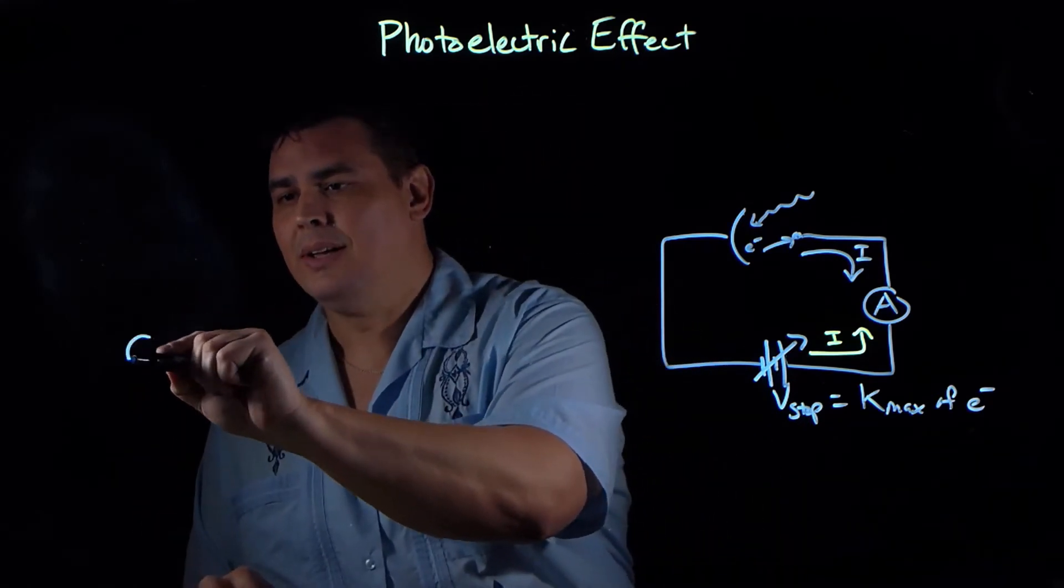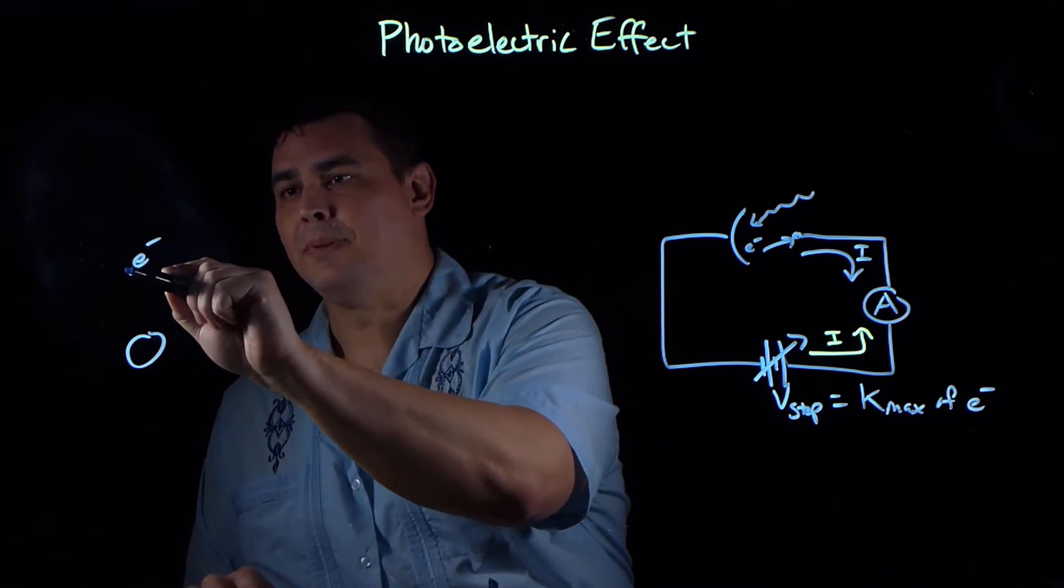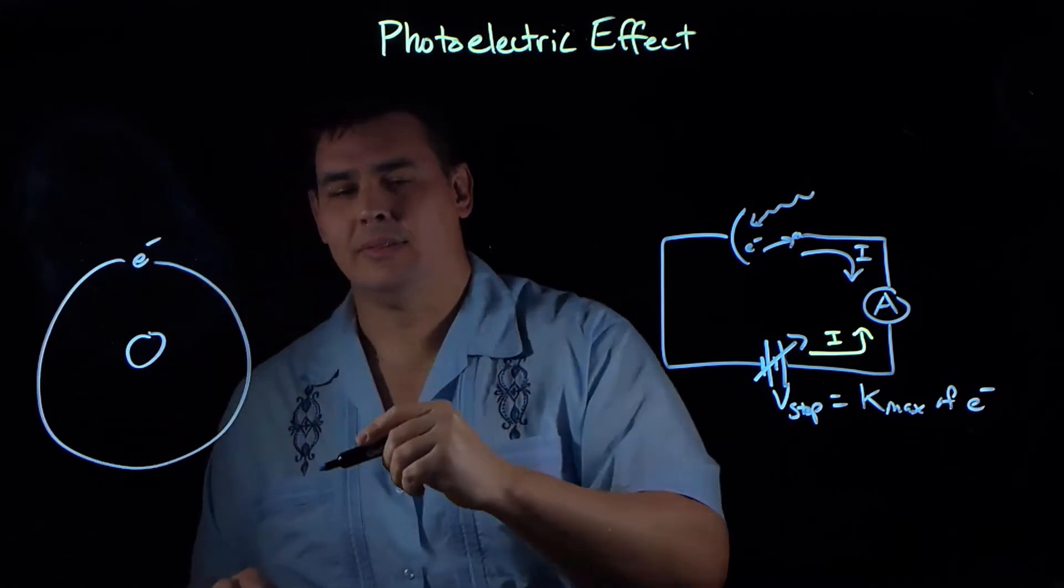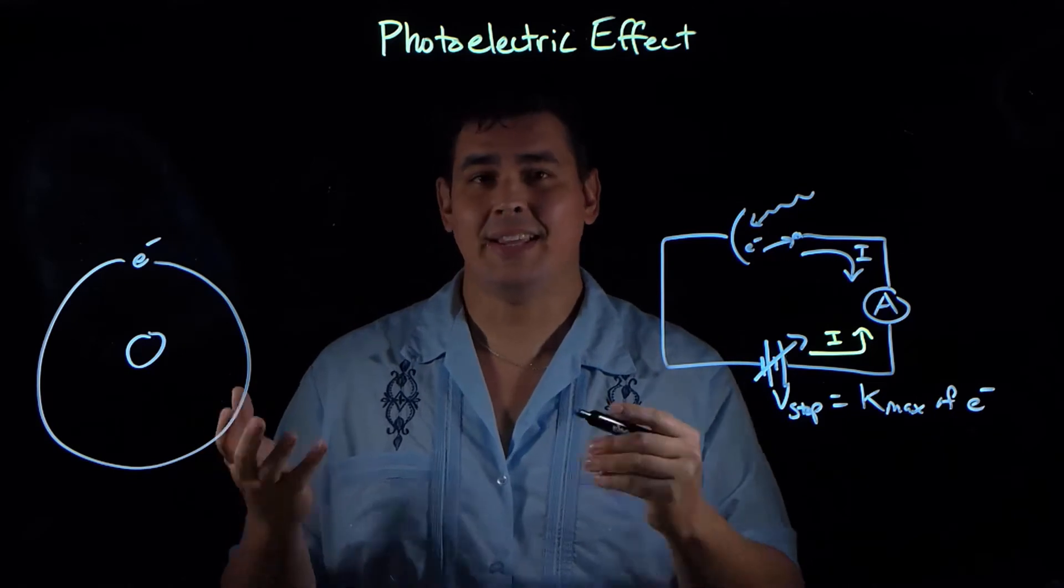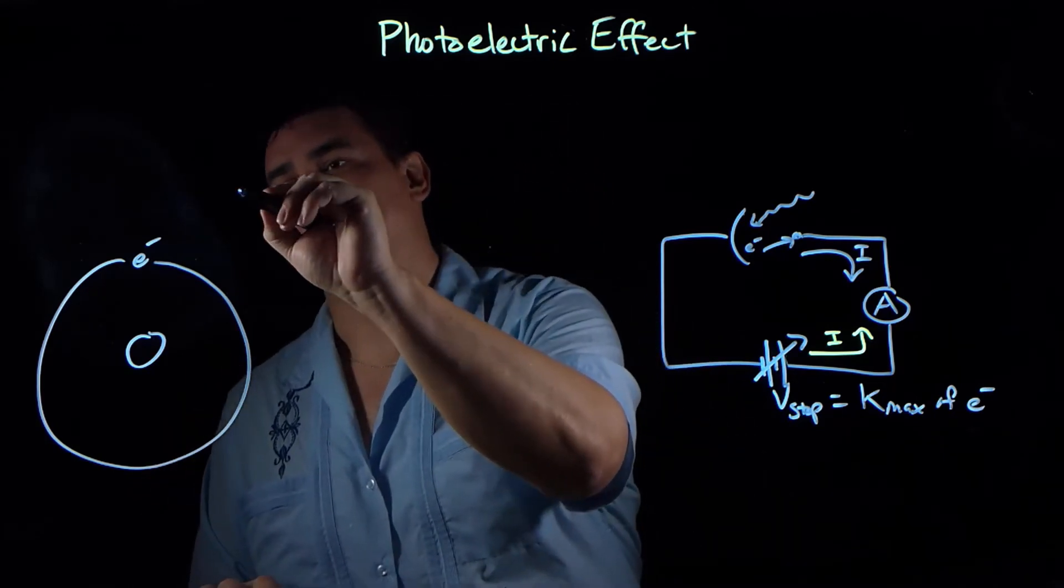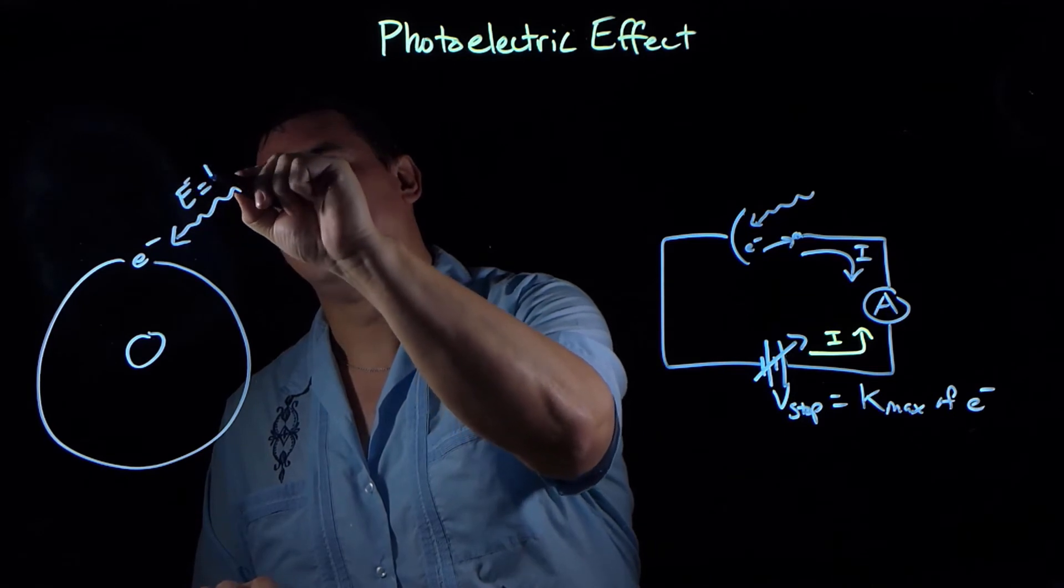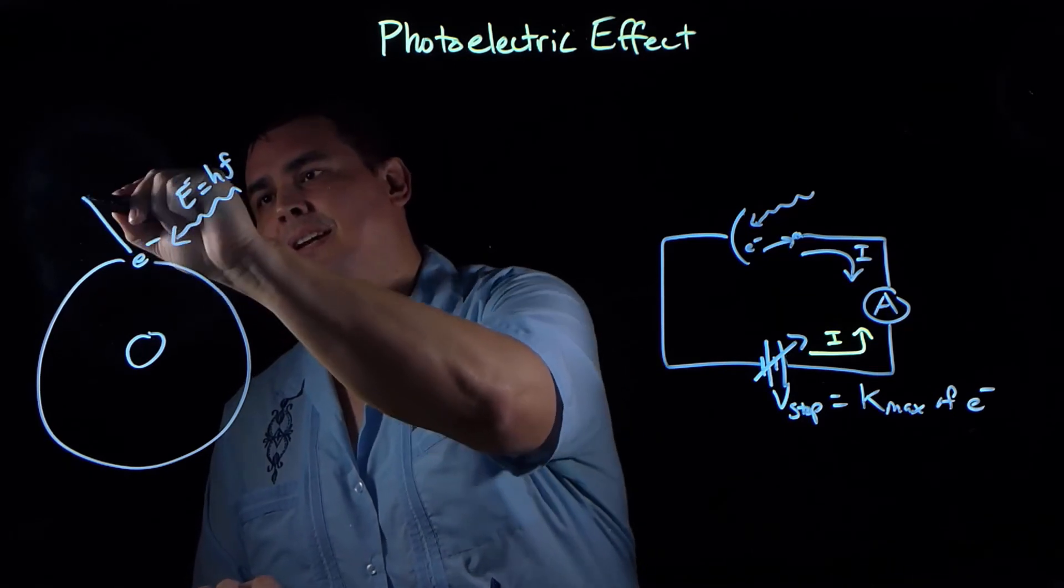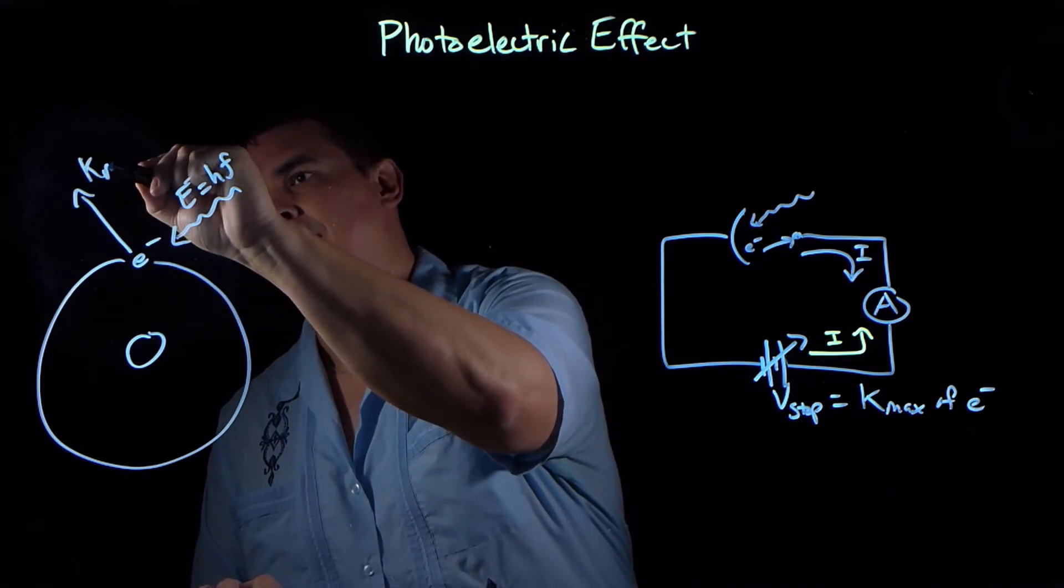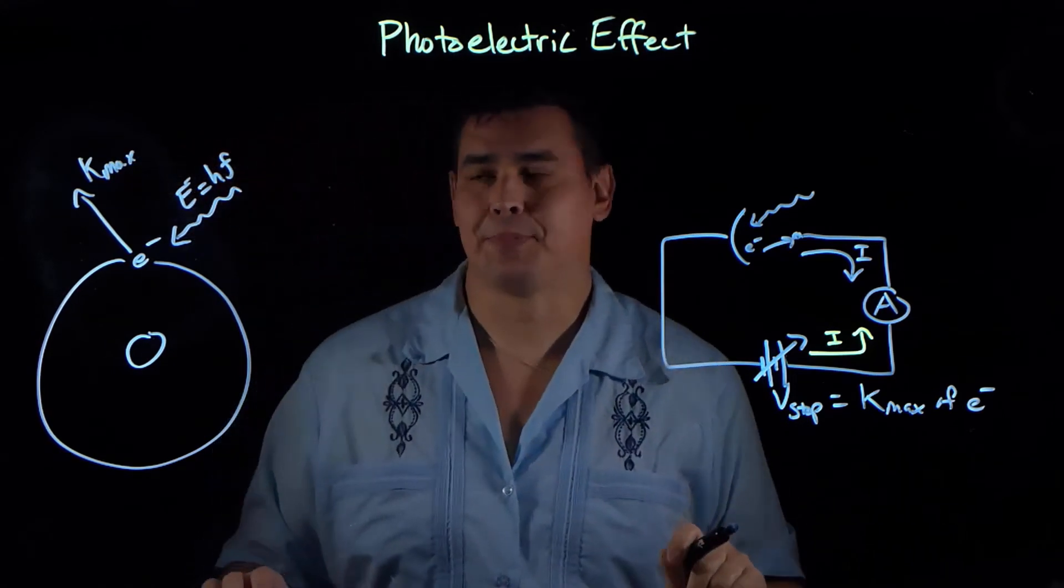So here's Einstein's model, and it's really simple and elegant. And it makes a lot of sense now, but back in the day, this was not something that people were ready to accept. So here's this photon that's going to come in, and it's going to strike this electron, and the electron's going to jump off, and it's going to have some maximum kinetic energy.